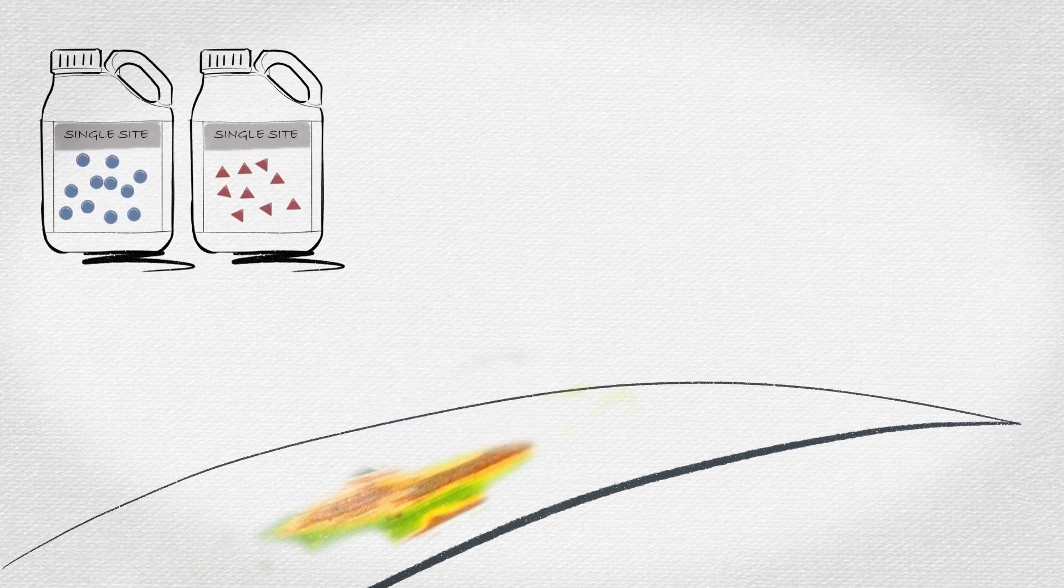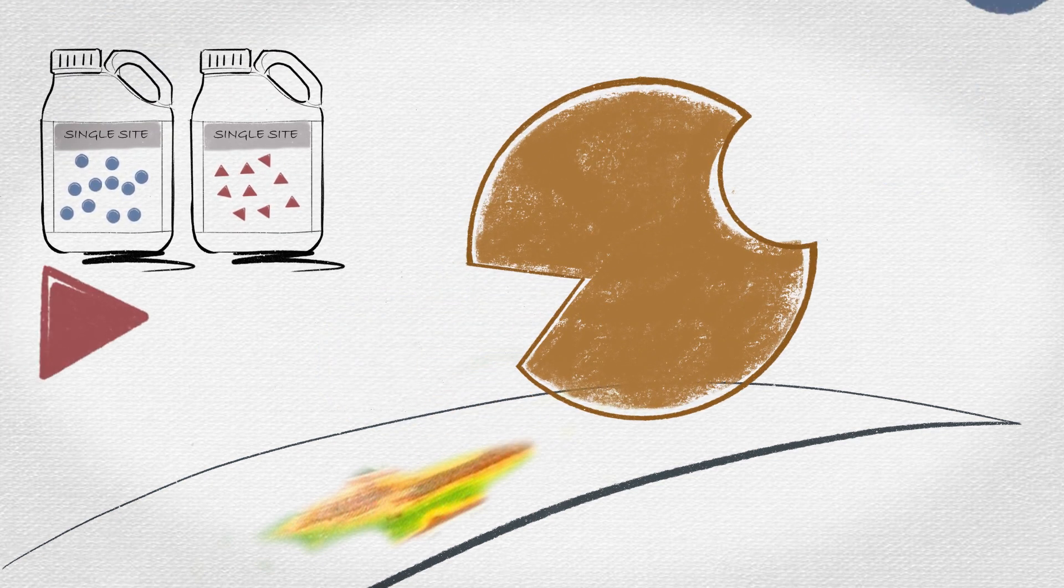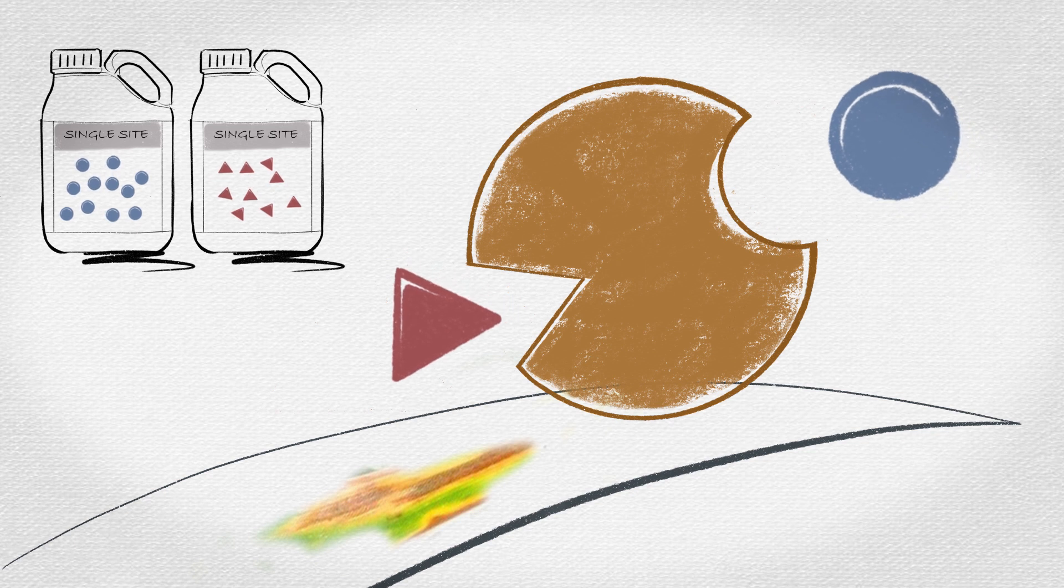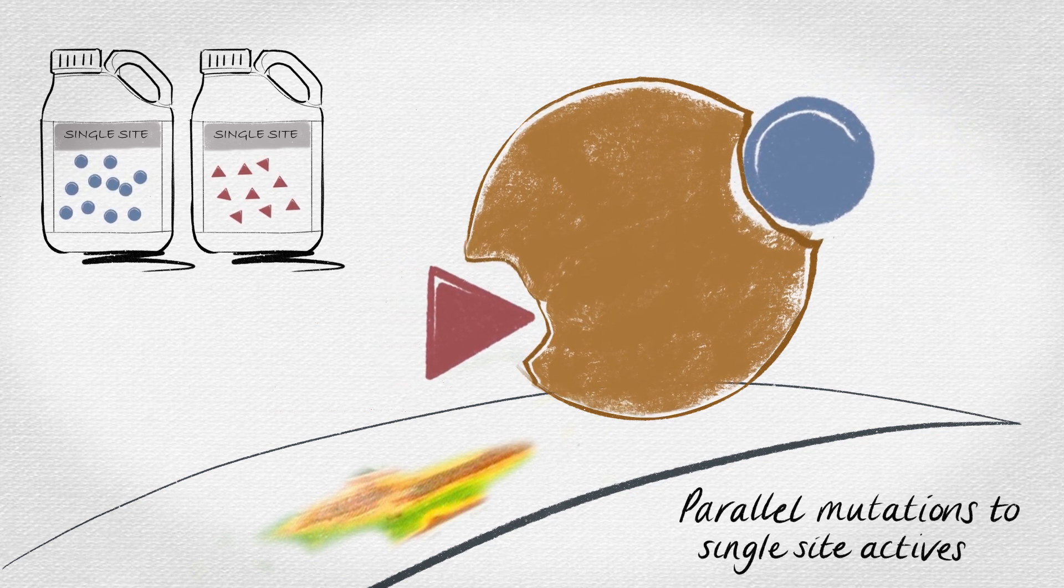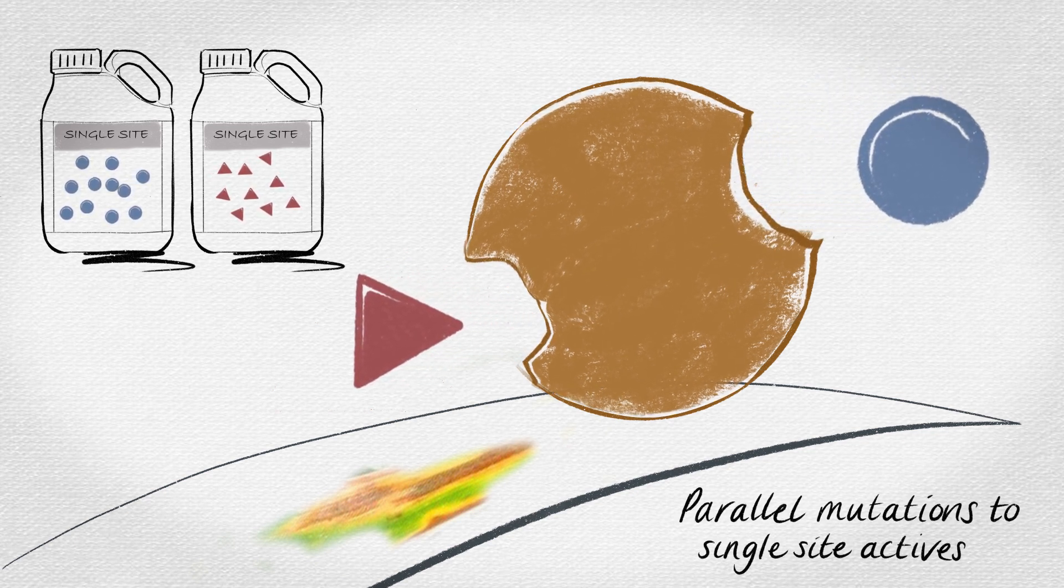Using a variety of single-site active ingredients together can provide protection against resistance. However, mutations can develop to each of the single-site actives in parallel, leading to resistance to both fungicides in the pathogen at the same time.